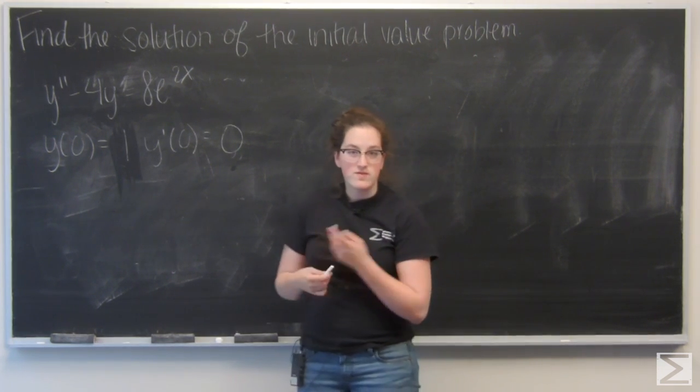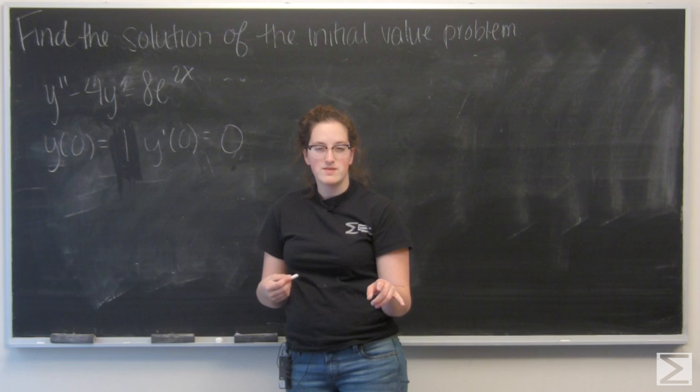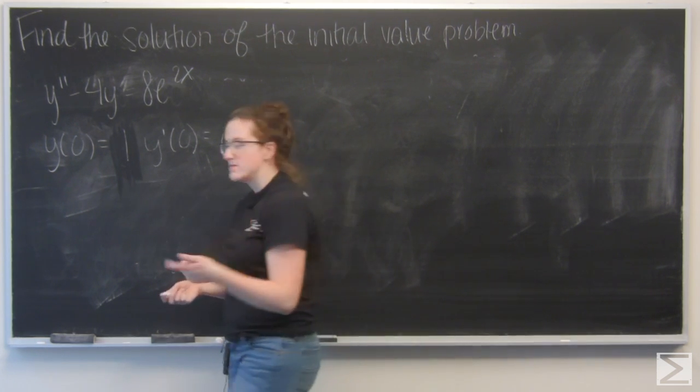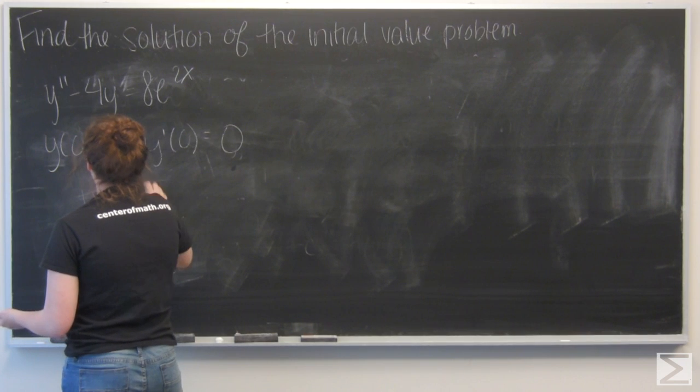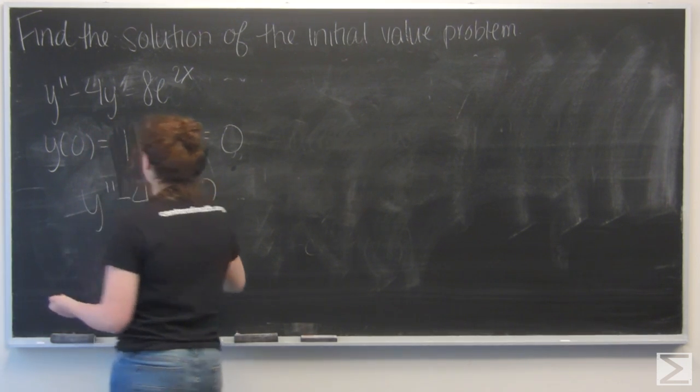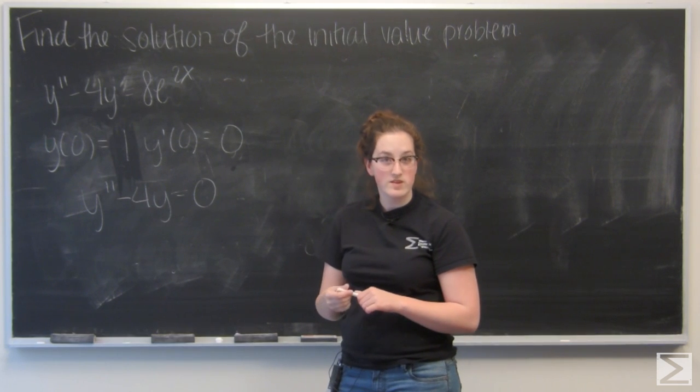To get started on finding this solution, first I want to take a look at the homogeneous solution that is equivalent for the system. That is going to be y double prime minus 4y equals 0.